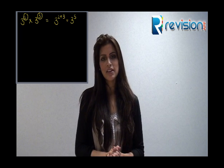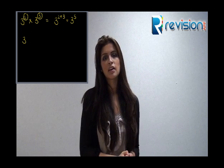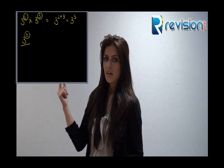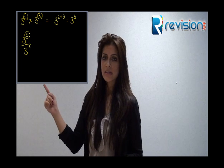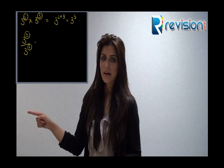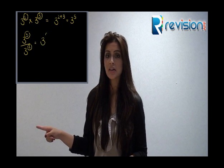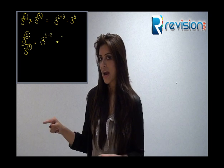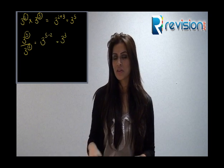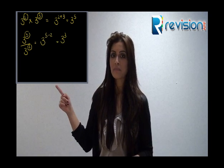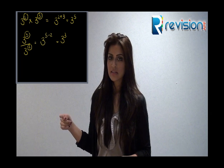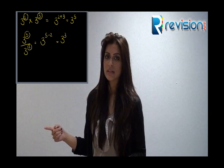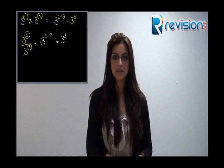Let's move on to division of indices. Look at this example here. 3 to the power of 5 divided by 3 squared means we have to subtract the indices. So 5 minus 2 is 3, and 3 to the power of 5 over 3 squared is 3 cubed.